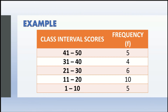We have the class interval scores grouped into 41 to 50, 31 to 40, 21 to 30, 11 to 20, and 1 to 10. On the second column we have the frequency. Frequency talks about how many times those numbers appeared: 41 to 50 appeared five times, 31 to 40 four times, 21 to 30 six times, 11 to 20 ten times, and 1 to 10 is 5.